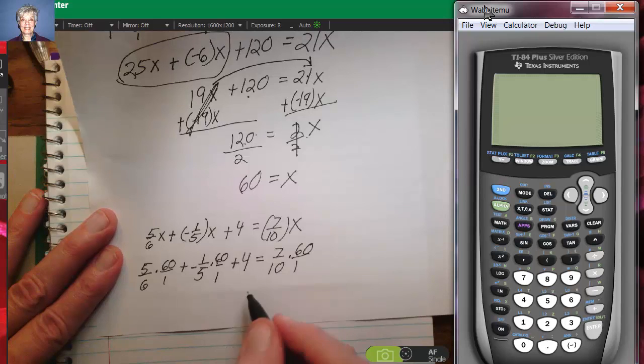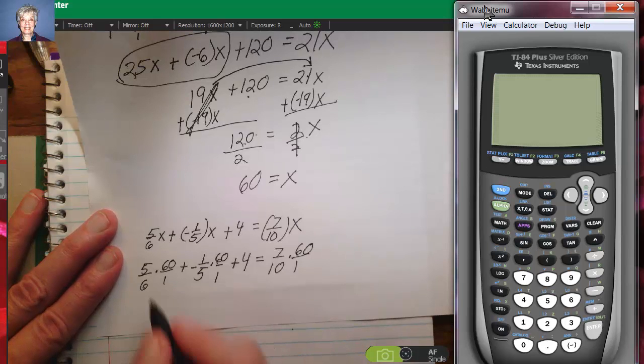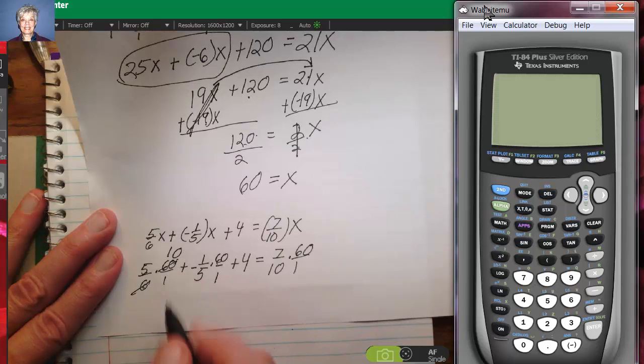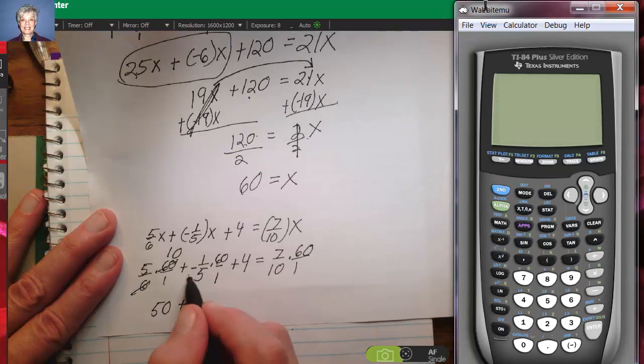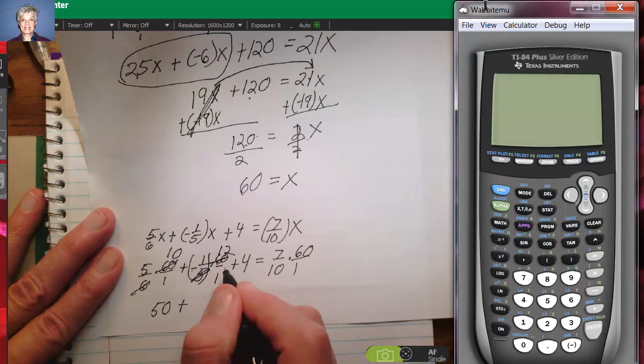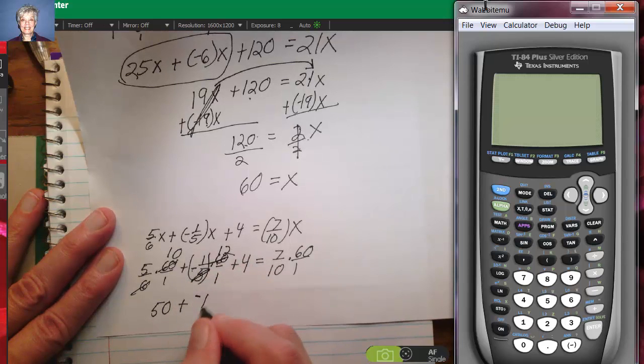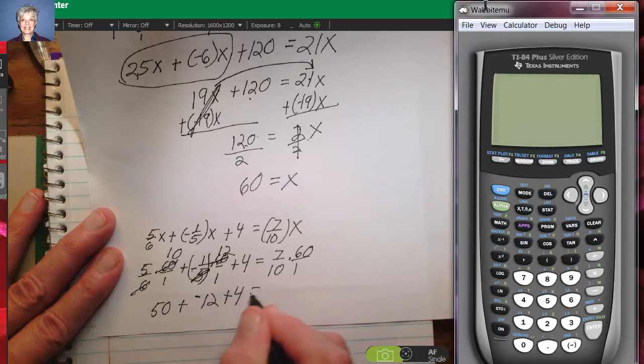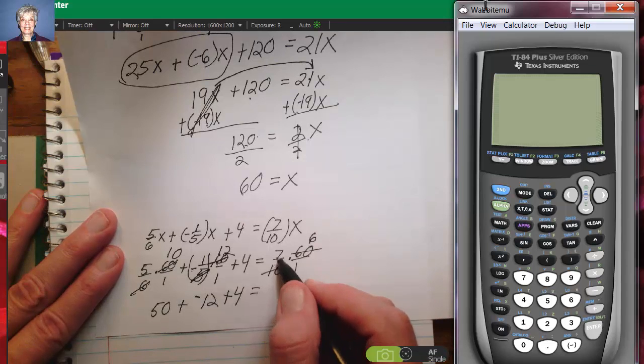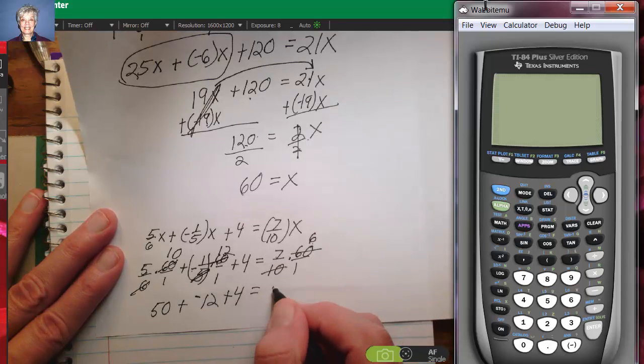Now, I need to get the same answer on the left as I get on the right. Let's see if it happens. 6 goes into 60 ten times, so 5 times 10 is 50 plus, this is negative, negative 1/5, 5 goes into 60 twelve times, so 12 times negative 1 is negative 12, plus 4 equals, over here we're going to get 10 divided into 60 is 6, and 7 times 6 is 42.